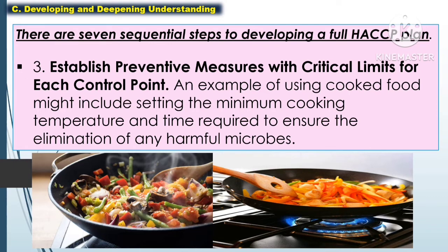The third step is to establish preventive measures with critical limits for each control point. An example using cooked food might include setting the minimum cooking temperature and time required to ensure the elimination of any harmful microbes.